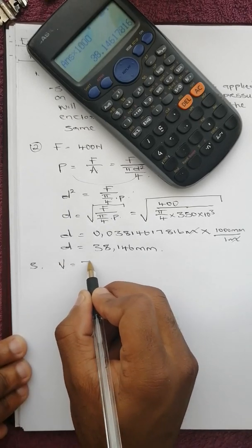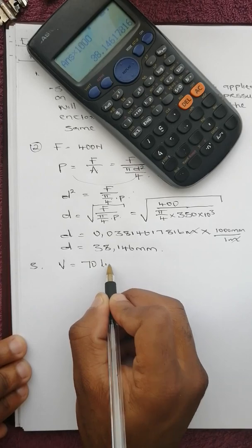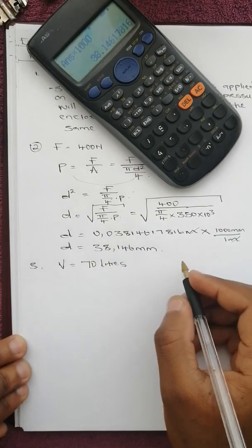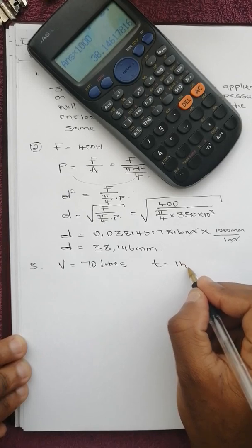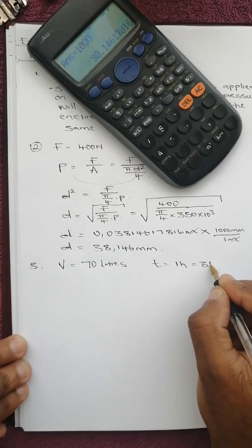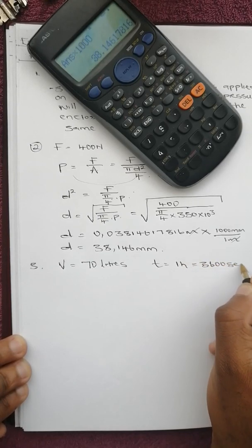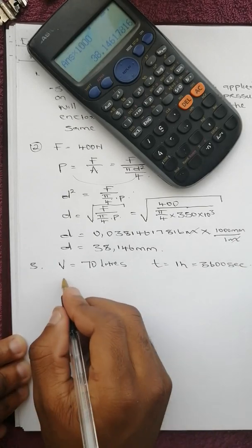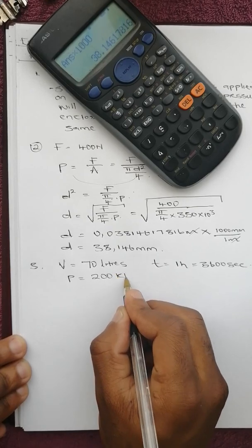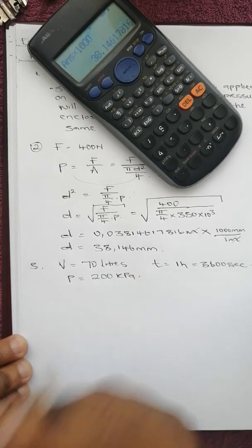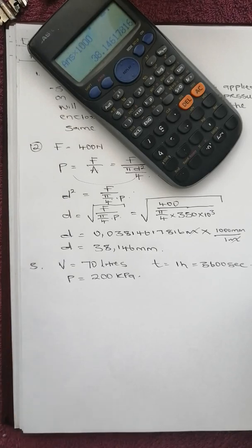For number 3, we are given volume equals 70 liters, time is one hour which is 3600 seconds, and pressure is 200 kilopascals.